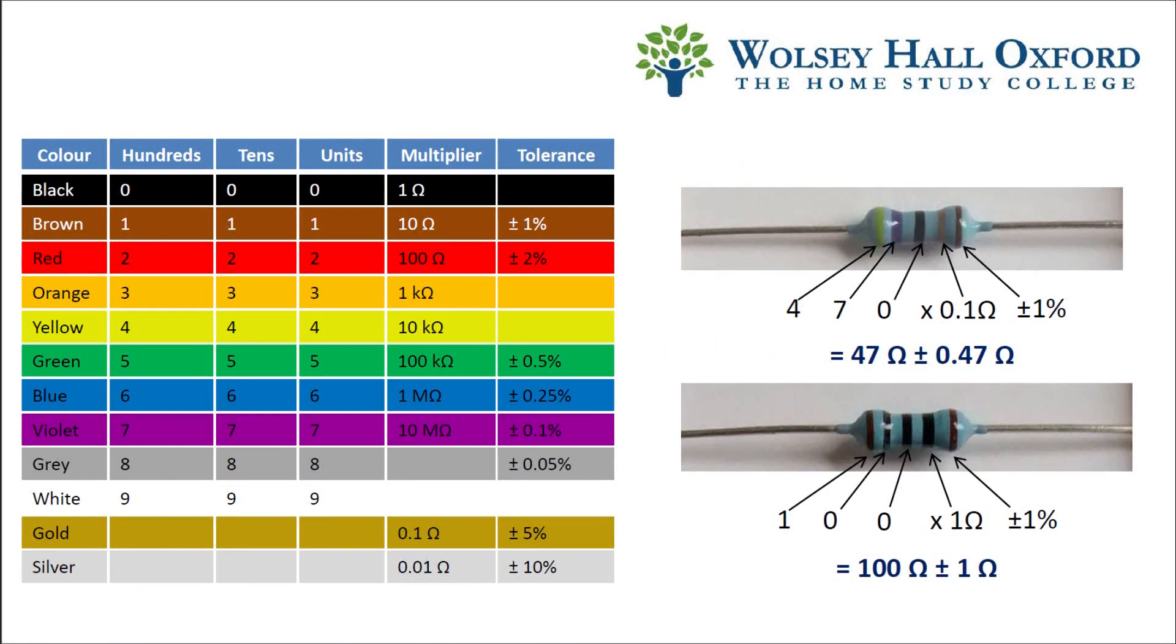Just to refresh your memory, this is the table we use to work out the resistance values. We know, for example, that this is a 47 ohm resistor because the dirty yellow followed by the purple and black corresponds to 470. And the gold band means we multiplied by 0.1 ohms. This makes 47 ohms.